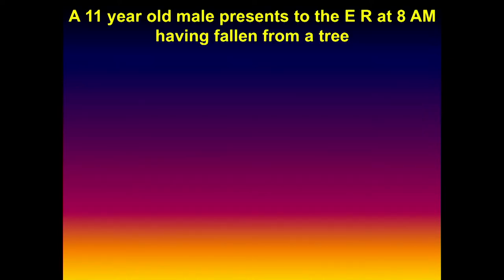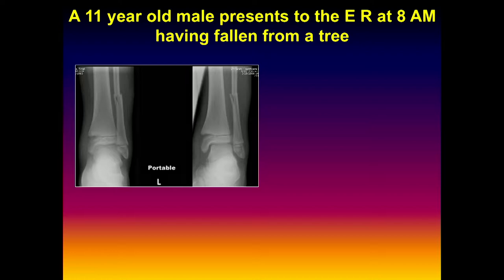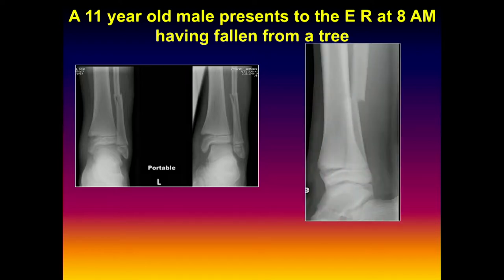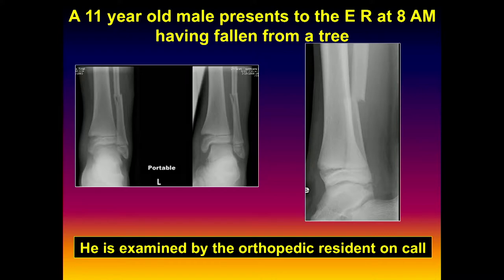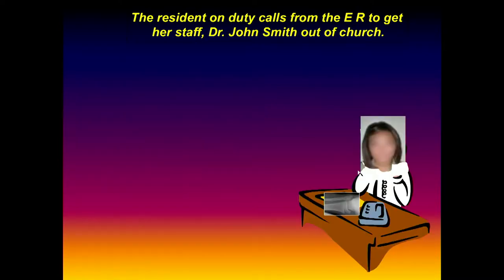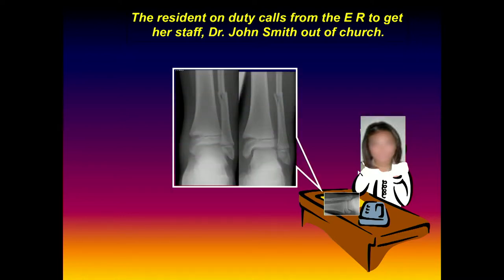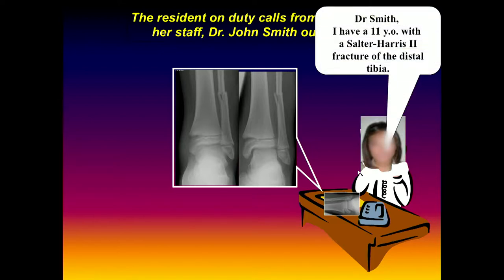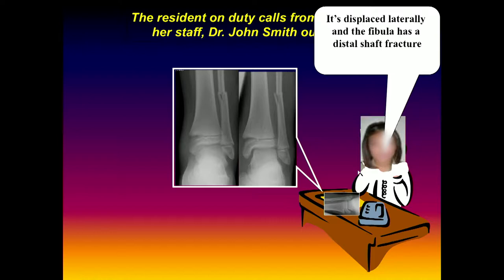Here's an 11-year-old male who presents to the emergency room at 8 a.m. having fallen from a tree. He had a swollen ankle on the left, and here you can see a lateral view of the x-ray. He was examined by the orthopedic resident on call; his only injury involved the left ankle, which was swollen and tender. The resident on duty got her attending, Dr. John Smith, out of church — it occurred on Sunday morning. She described the x-ray to Dr. Smith: an 11-year-old with a Salter-Harris 2 fracture of the distal tibia, displaced lateral, and the fibula has a distal shaft fracture.